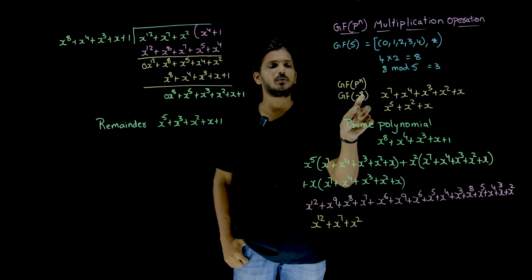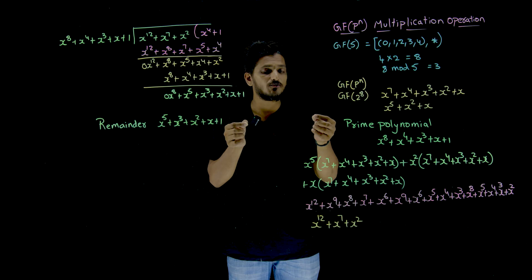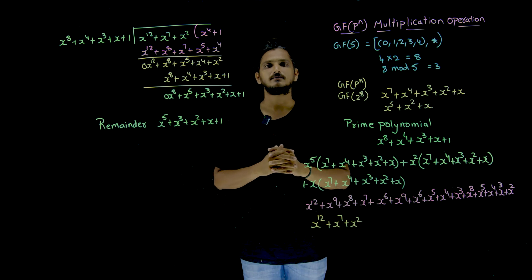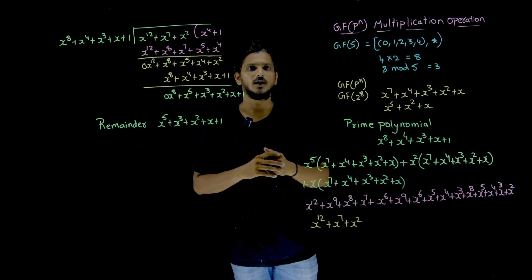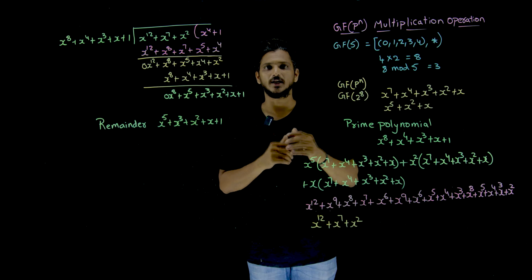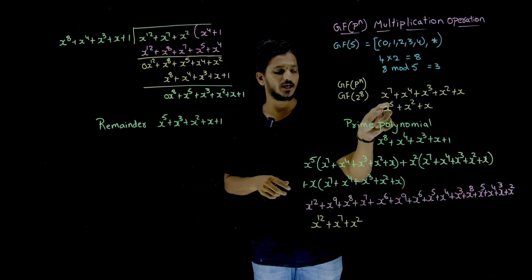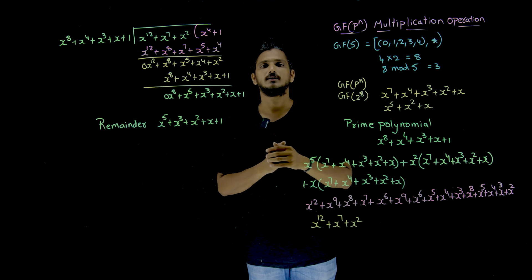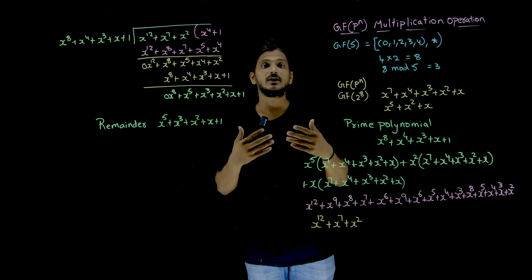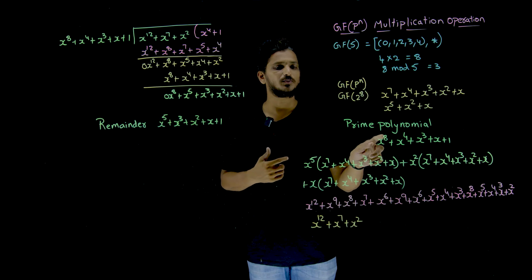Let us take an example. GF of 2 power 8 means 8-bit words. You can design a polynomial — these 8-bit words can be written in polynomial form. The highest degree is 7 in your polynomial equation. These things were discussed previously. So let us take two elements. This is one element: x power 7 plus x power 4 plus x cube plus x square plus x. Another element: x power 5 plus x square plus x. If you multiply these two elements, x power 5 multiplied by x power 7 gives x power 12. Our polynomial equation is going beyond x power 7, and in order to bring it back, we have to divide with a prime polynomial of degree x power 8.